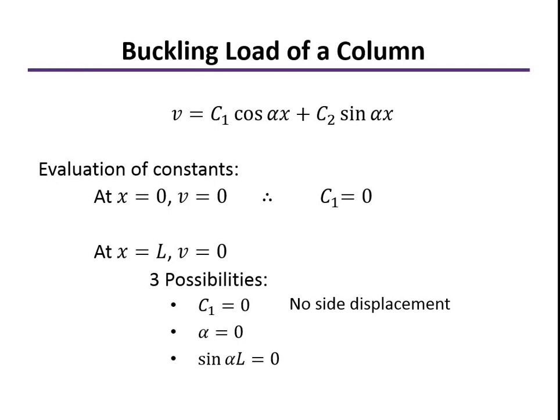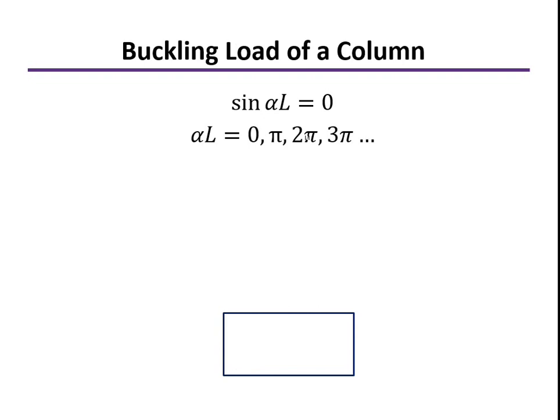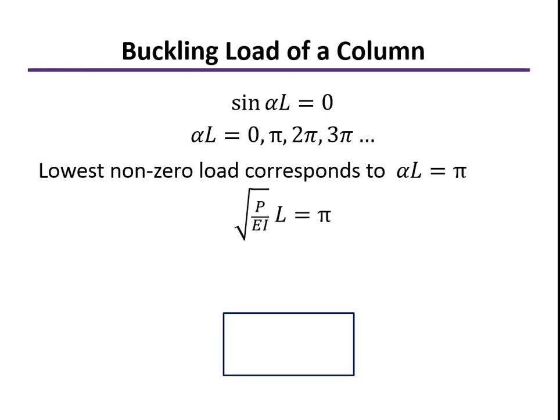In the first case, if C1 is equal to zero and C2 is equal to zero, that says there's no side displacement. If the column is straight up and down, it's not displaced to the side, then we know we're in equilibrium. That's kind of a trivial result for us. Also, if alpha equals zero, remember the definition of alpha is the square root of P over EI. That means that P is equal to zero. Again, if there's no axial force, then certainly we're in equilibrium. The third possibility is the one that we're interested in here, which is that the sine of alpha L is equal to zero. There's an infinite number of alpha Ls that will cause that to be true. The lowest non-zero value corresponds to alpha L being equal to pi. Again, putting in our definition for alpha, squaring both sides, and solving for P, we find that the buckling load of a column, P critical, is pi squared EI divided by L squared. This is just for pinned ends.